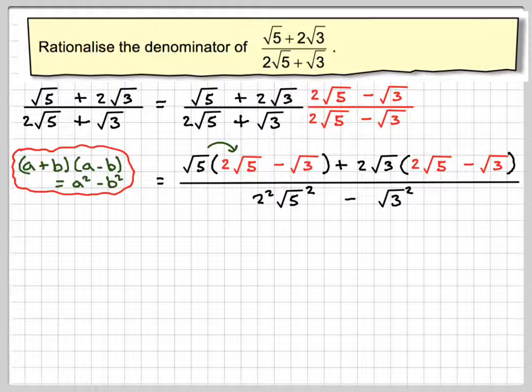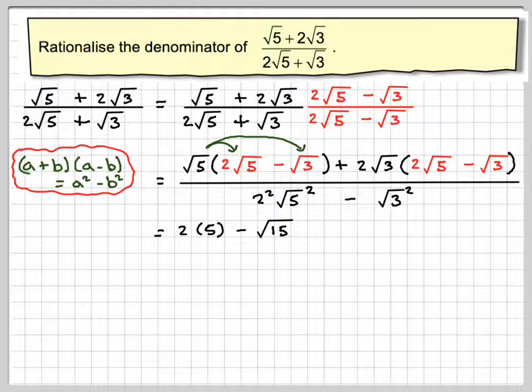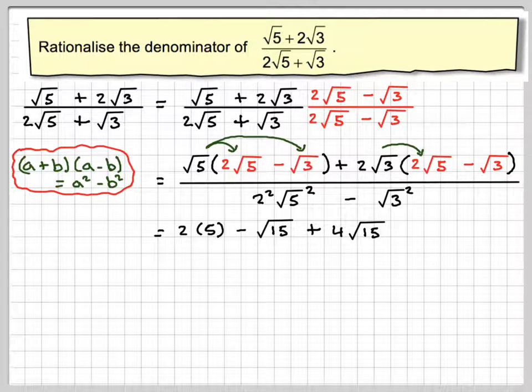Right, multiplying the top. So root 5 times 2 root 5 becomes 2 times 5, because root 5 times root 5 is the square root of 25, which is 5. Root 5 times minus root 3 is going to be minus root 15. Plus 2 root 3 times 2 root 5 is going to be plus 4 root 15. Root 3 times root 5 is root 15.